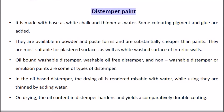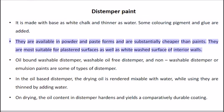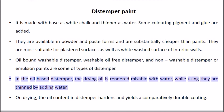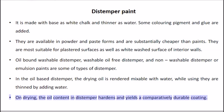Distemper paint is made with white chalk as base and water as thinner. Some coloring pigment and glue are added. They are available in powder and paste forms and are substantially cheaper than paints. They are most suitable for plastered surfaces as well as whitewashed surfaces of interior walls. Types include oil bound washable distemper, washable oil free distemper, and non-washable distemper. In oil-based distemper, the drying oil is rendered mixable with water; on drying, the oil content hardens and yields a comparatively durable coating.